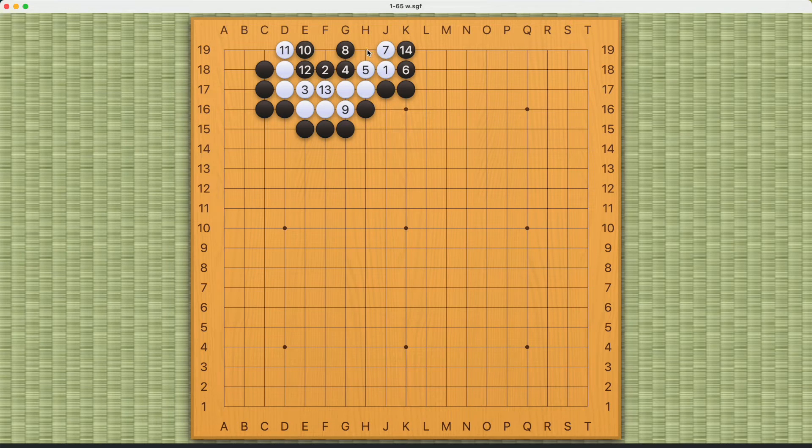White is very short on liberties and this will not work. If white plays on the inside like this, then this is already a very bad shape for white. Black can simply play this, and this will end up being a bulky six shape after black fills in both this point and this point.